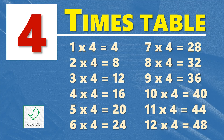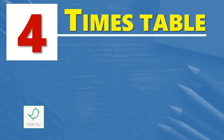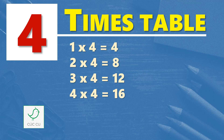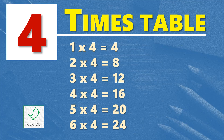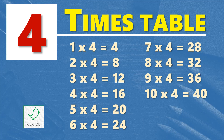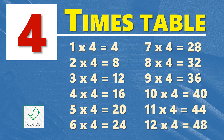Multiplication table of 4. 4 times table. 1 times 4 is 4, 2 times 4 is 8, 3 times 4 is 12, 4 times 4 is 16, 5 times 4 is 20, 6 times 4 is 24, 7 times 4 is 28, 8 times 4 is 32, 9 times 4 is 36, 10 times 4 is 40, 11 times 4 is 44, 12 times 4 is 48.